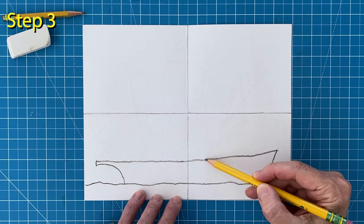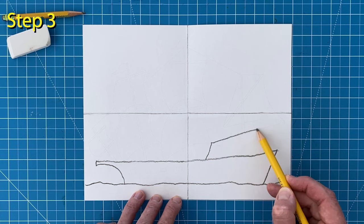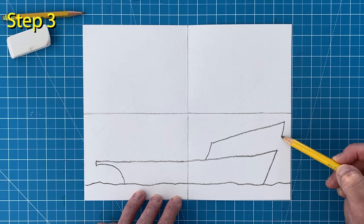Step number three. Next add an extra section on top of the right side of the ship which I think are the living quarters.